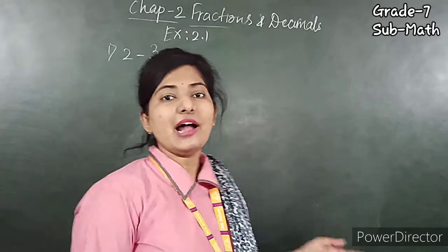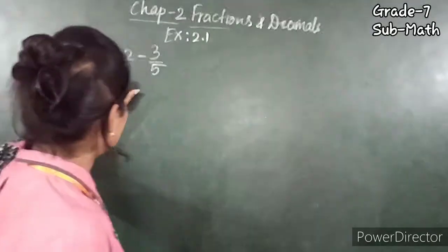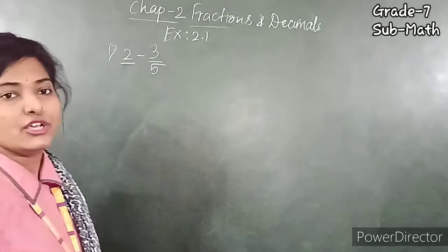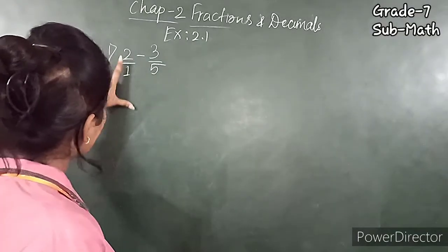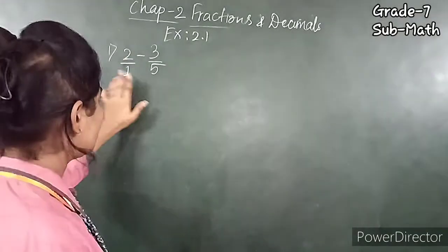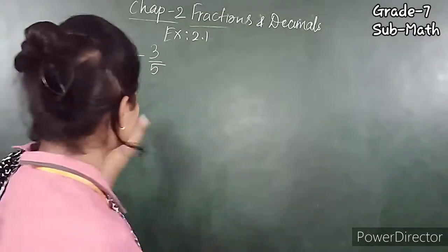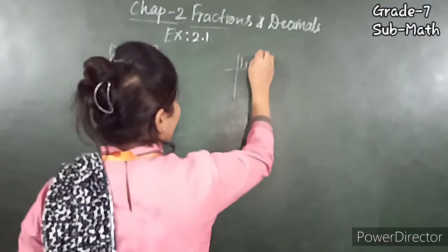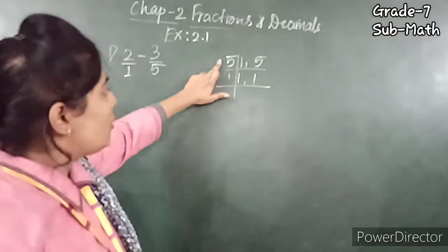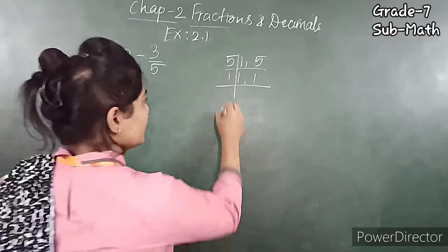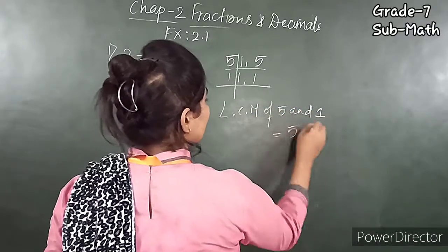Let's start exercise 2.1. Our first question is 2 minus 3 upon 5. Here, the whole number 2 has no denominator, so we write 1 there. Our question becomes 2 upon 1 minus 3 upon 5. The denominators are different, so we have to take the LCM of 1 and 5. The LCM of 5 and 1 is equal to 5.